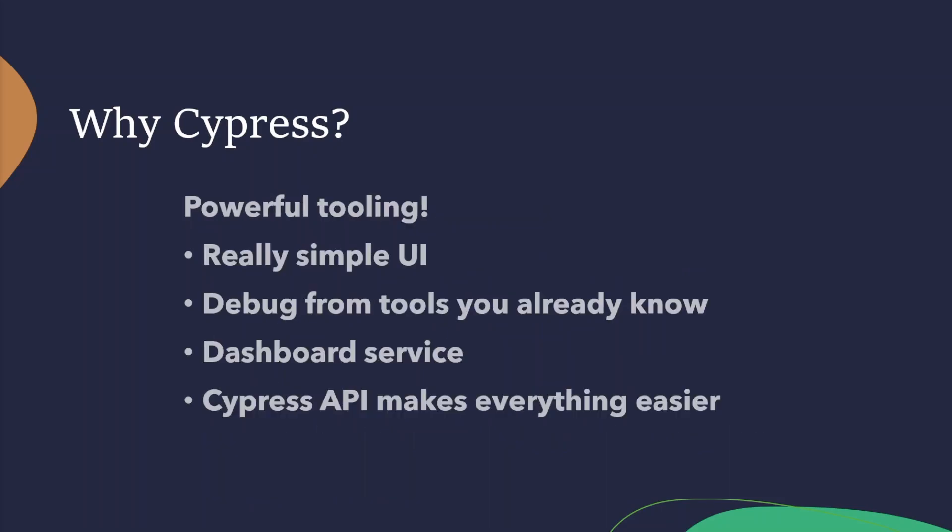It also has powerful tooling with a really simple UI to create, execute, and debug tests. There are time travel options where Cypress will take snapshots as your test runs. You can hover over them, look at the commands inside the Cypress command log, and see exactly what's going on for each step. You can also debug directly from familiar tools like Chrome DevTools. Errors and stack traces are made to be readable for quick debugging. The UI will visually show you the command execution, any assertions, network requests, spies, stubs, page loads, and URL changes. Cypress has hundreds of custom error messages that describe the exact reason why Cypress failed a given test.